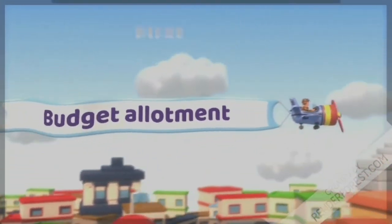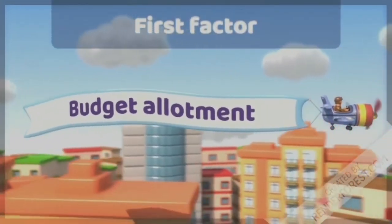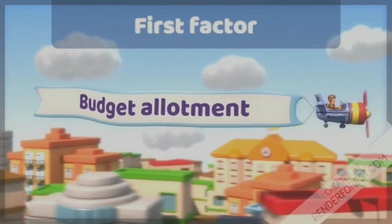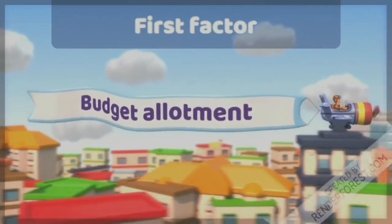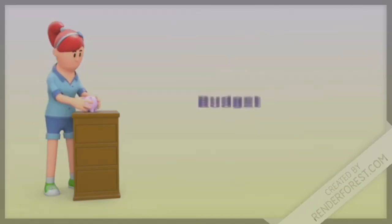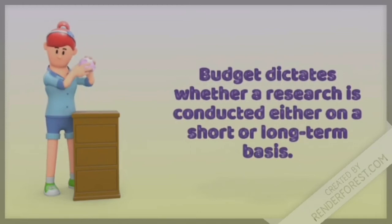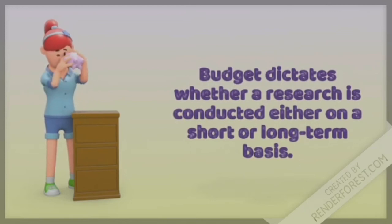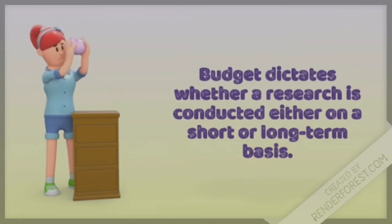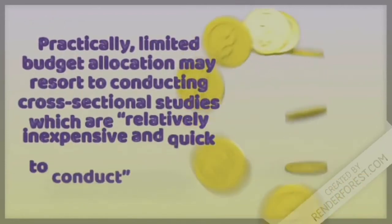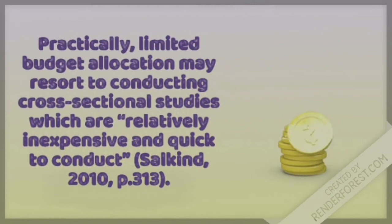Factors that may influence research type selections. First factor: budget allotment. Budget dictates whether a research is conducted either on a short or long-term basis. Practically, limited budget allocation may resort to conducting cross-sectional studies which are relatively inexpensive and quick to conduct, according to Salkin.